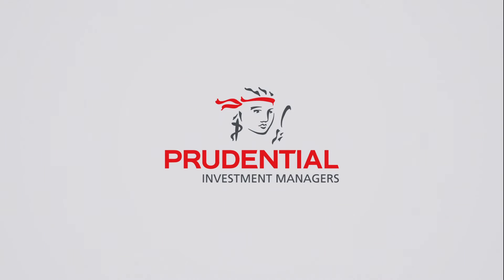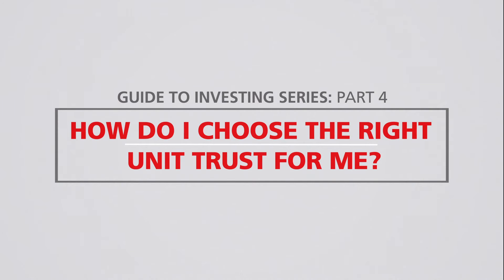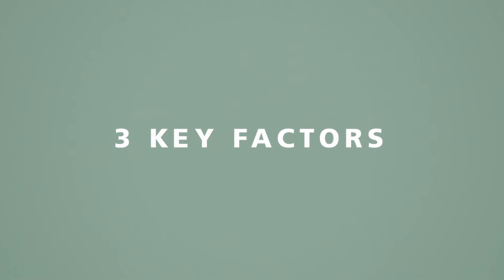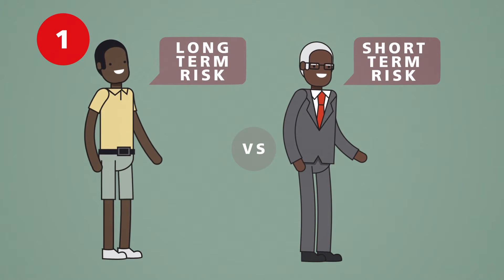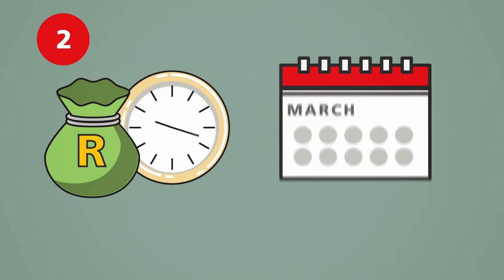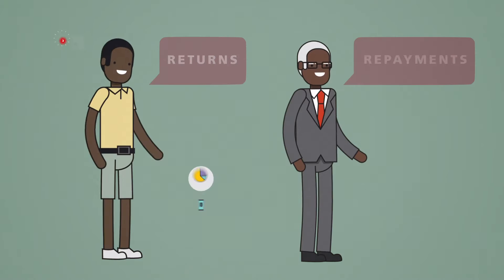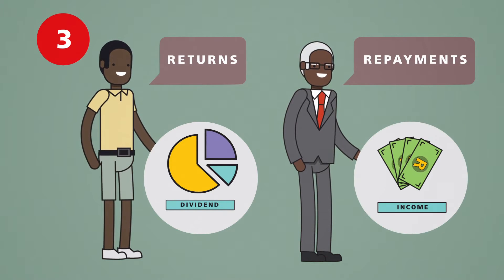Welcome to the guide to investing part 4, where we look at choosing the right unit trust. Choosing which unit trusts suit your needs depends on three key factors: what level of risk you are able to tolerate, your investment time horizon, and what type of returns or repayments you'd like to receive.